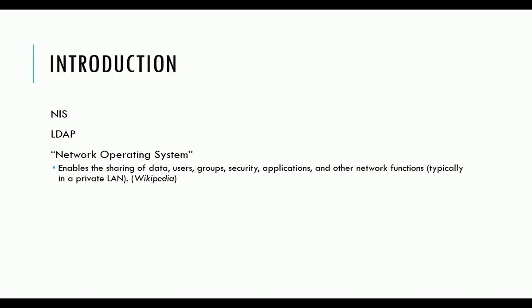So let's talk about some of the things you would use it for. It enables the sharing of data, users, groups, security, applications, and other network functions, typically on a private LAN. That's from Wikipedia — the generic definition of a network operating system. If you think about Microsoft Active Directory, it allows access to files and resources, and authentication is managed through Active Directory. The same with older platforms like Novell.